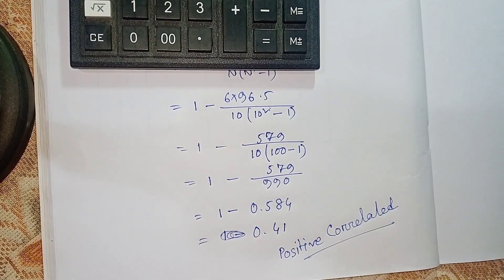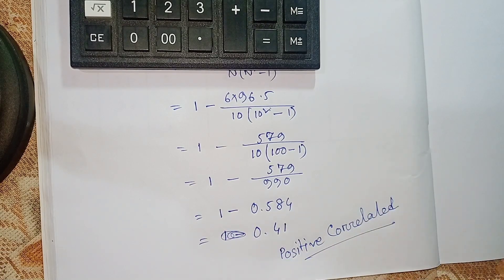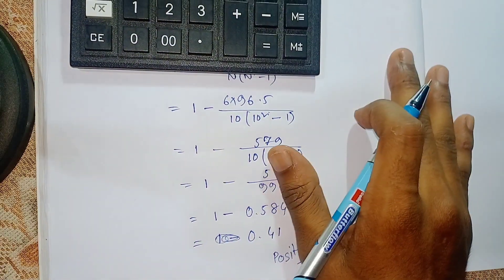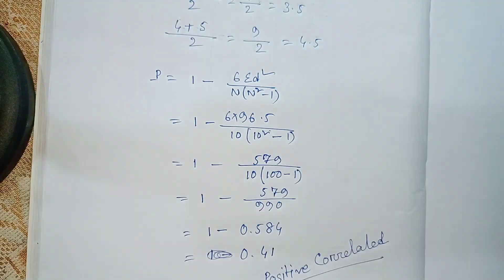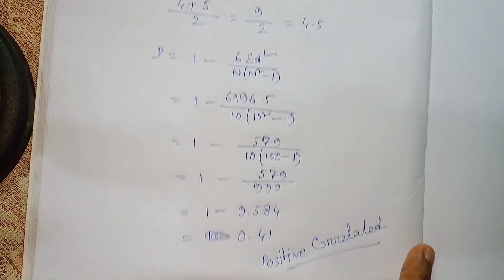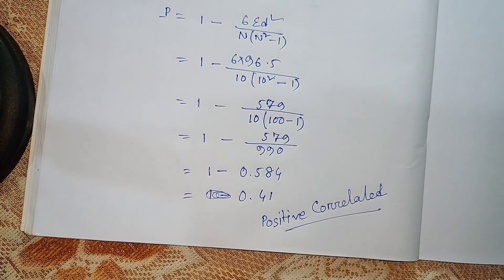If the result is minus, you will be negative correlated. If the result is positive, you will be positive correlated. Since our result is positive, it is positively correlated. After getting the result, you will be clear about the interpretation.